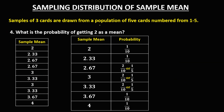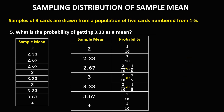The probability of getting 2 as a mean is 1 over 10, or 0.1. The probability of getting 3.3 as a mean is 1 over 5, or 0.2 in decimal.